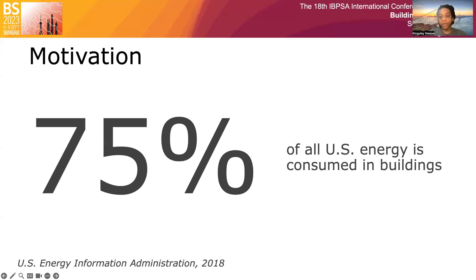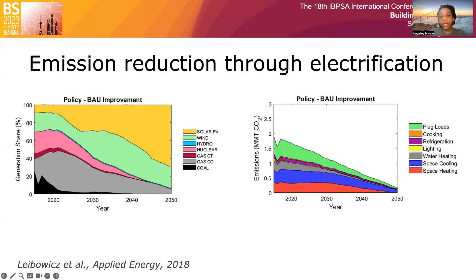The motivation for this work stems from the fact that buildings constitute a large percentage of the grid load. In the United States, the number is 75% of consumed electricity, and similar percentages are found in other countries. We can achieve decarbonization by increasing the share of renewable energy sources in the grid mix. Another pathway towards decarbonization is the adoption of energy efficient appliances and envelope retrofitting. Additionally, the electrification of fossil-fueled end uses can help achieve decarbonization goals.